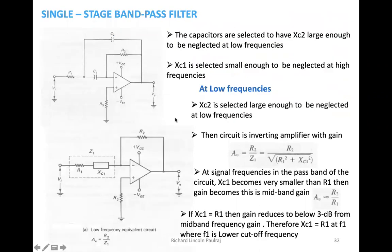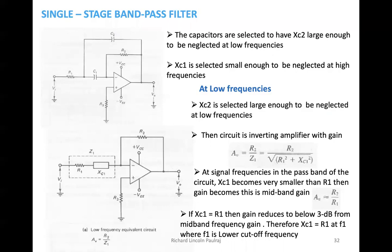There is also a single band pass filter configuration. The most important thing to know here is the gain formula, which is R2 divided by Z1. The capacitors are selected so that Xc2 is large enough at low frequencies. The relationship between frequency and capacitive reactance is that they are inversely proportional.